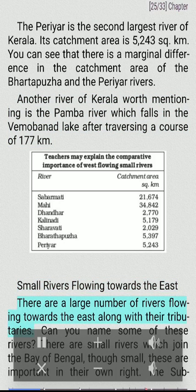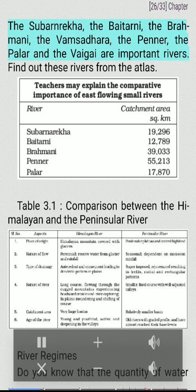There are a large number of small rivers flowing towards the east. Some small rivers join the Bay of Bengal and are important in their own right: the Subarnarekha, the Baitarni, the Brahmani, the Vamsadhara, the Penner, the Palar, and the Vaigai are important rivers among them.